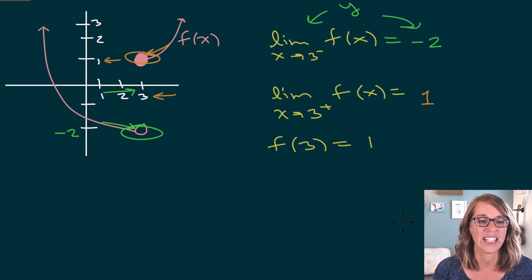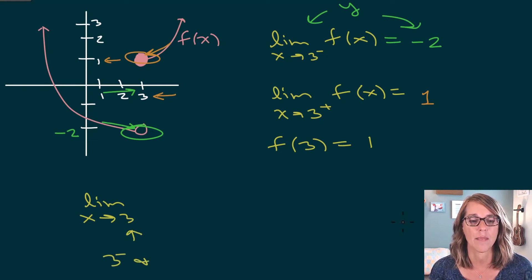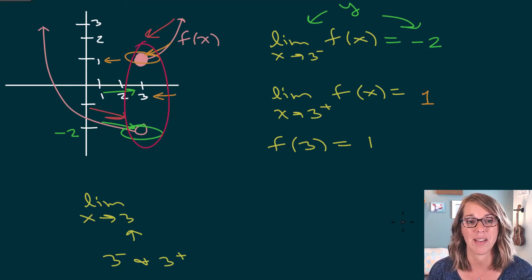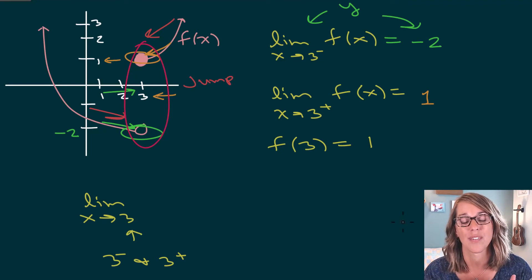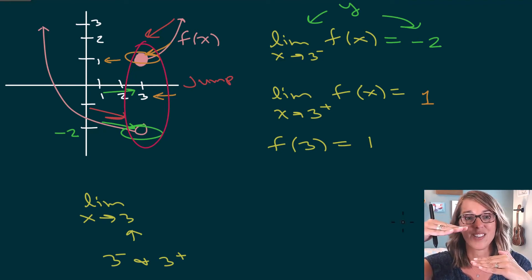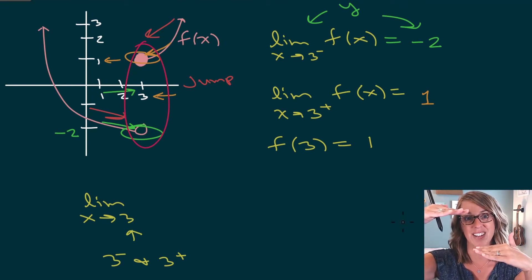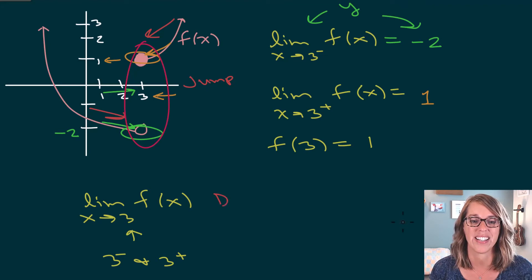We can also ask for the overall limit — the limit as x approaches 3 — which implies approaching from both the left and the right. As I'm doing both, approaching from the right and from the left, I am not coming up to the same value. We call this a jump discontinuity. My behavior from the left and the right don't match, so this limit does not exist. I can just write DNE.